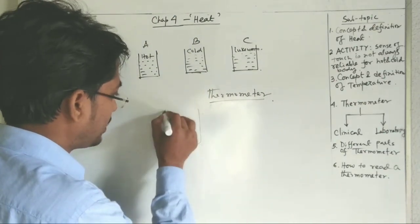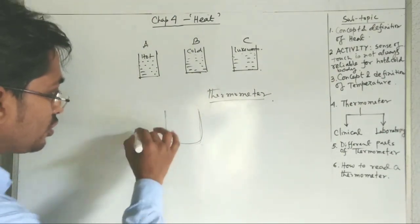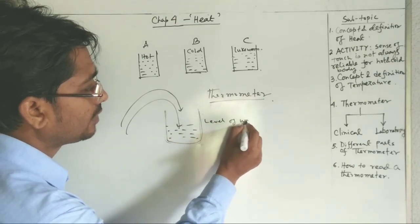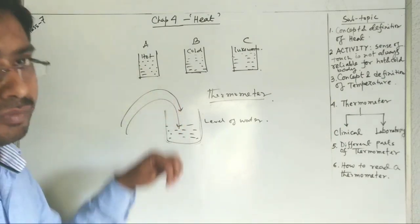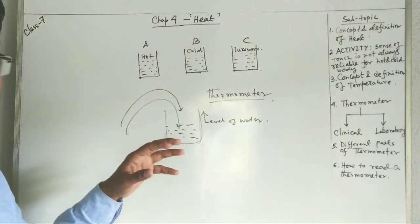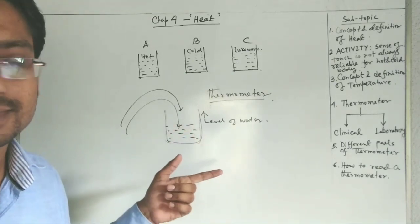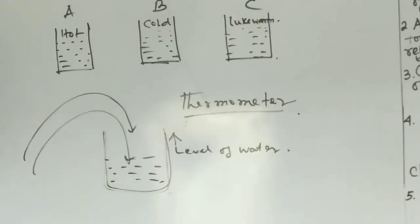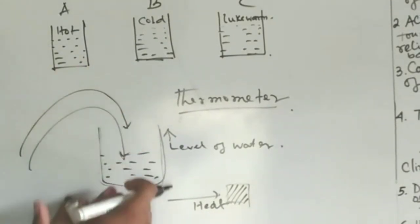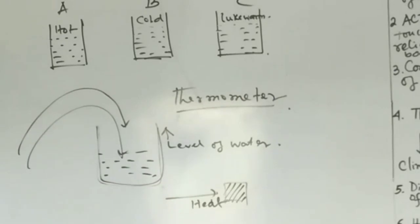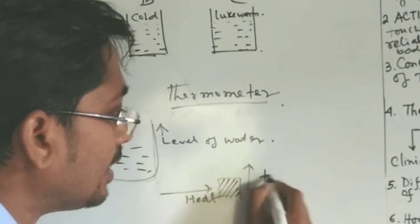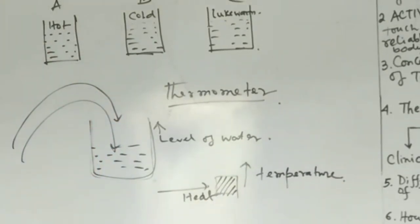A good analogy between heat and temperature is the amount of water versus the level of water. Think of a container — as you pour more water into it, the level of water increases. Similarly, if we equate the amount of water with heat and the level of water with temperature, when heat is given to a body, its temperature increases. This analogy helps us understand the relationship between heat and temperature.